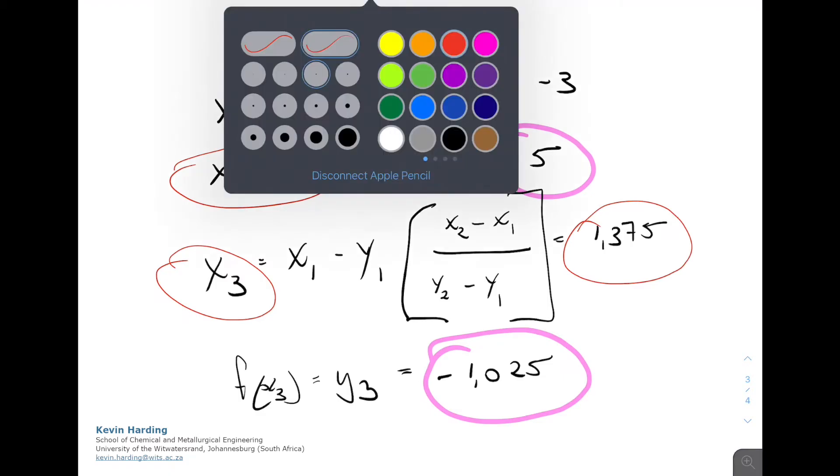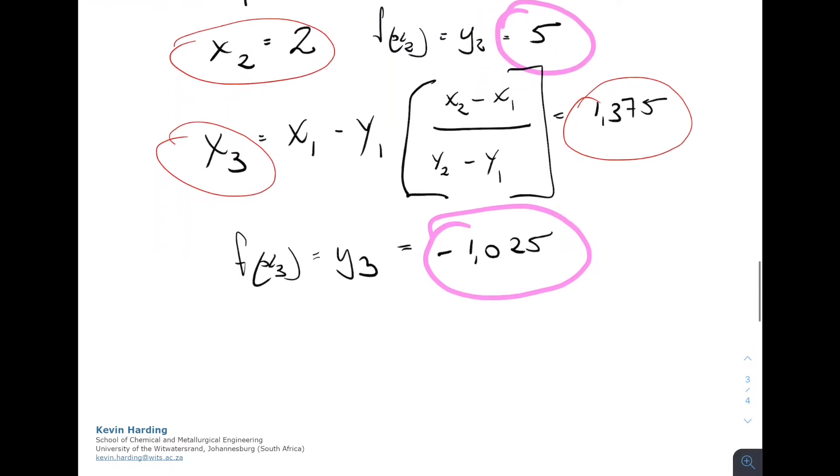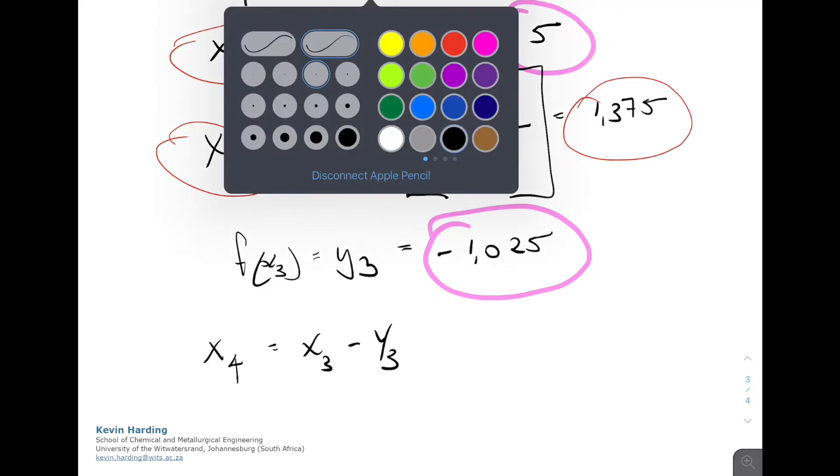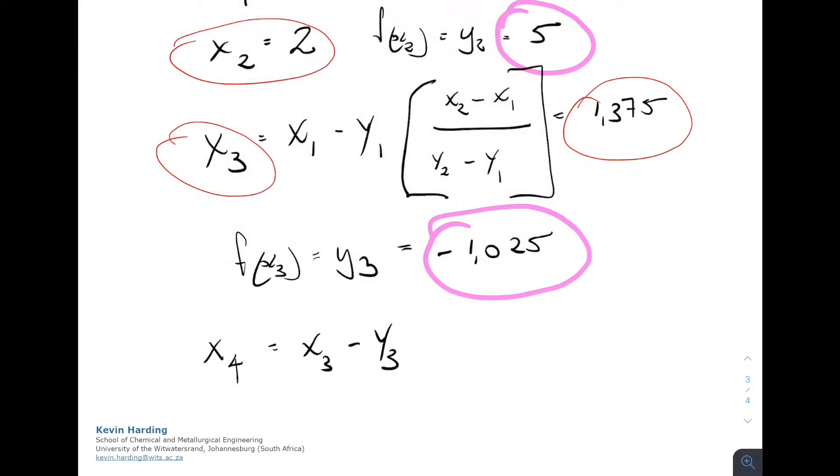So the next step, we now look at what would x4 be. So x4, we're again going to use the equation for the values that we had. So we have x4 is going to equal to x3 minus y3. So you'll see in this equation, the original equation for x3, we had x1 and y1. We replaced x1 and y1 with x3 and y3. So that's why we now move them down, replace them in the equation we are using.